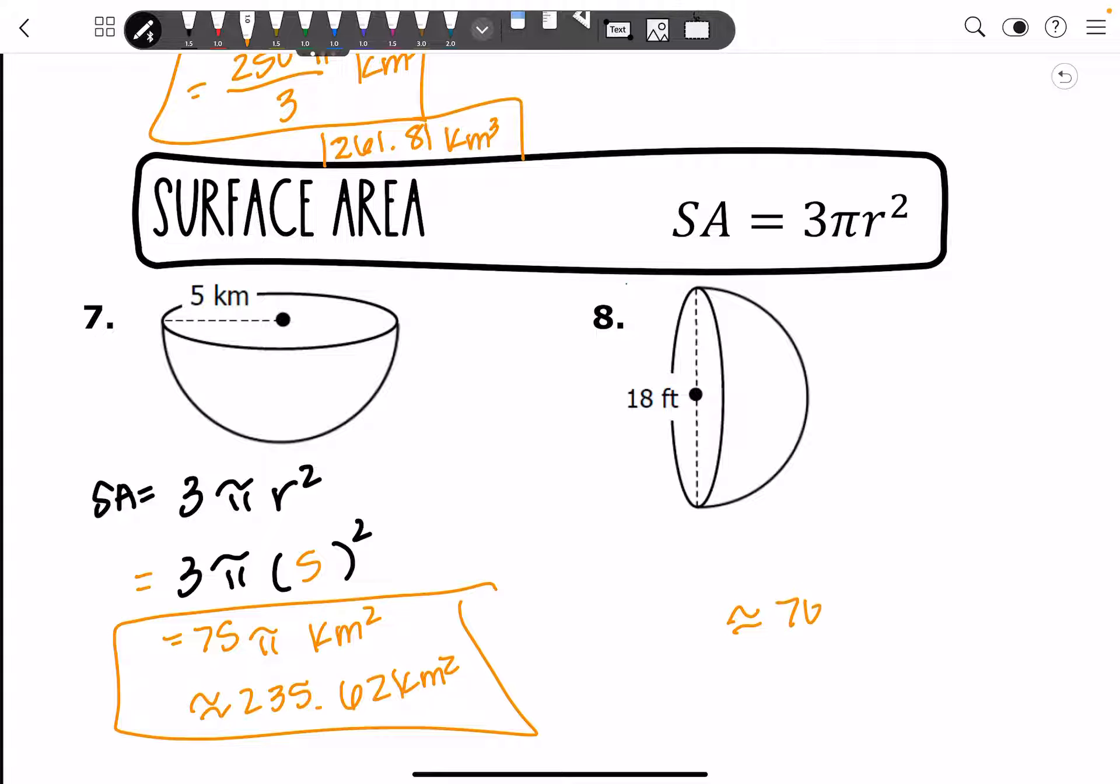And your approximate is going to be 736.41 feet squared. Because remember, we're working with area in P, A, V, 1, 2, 3.